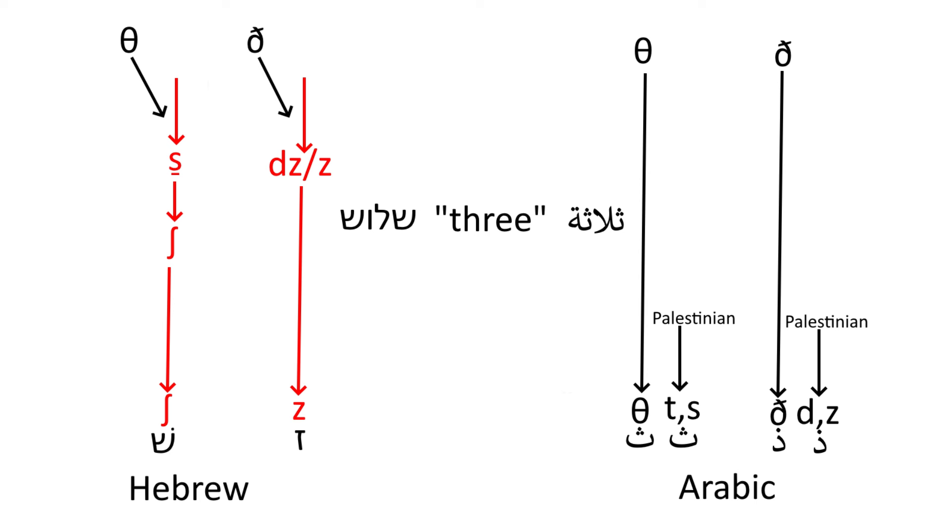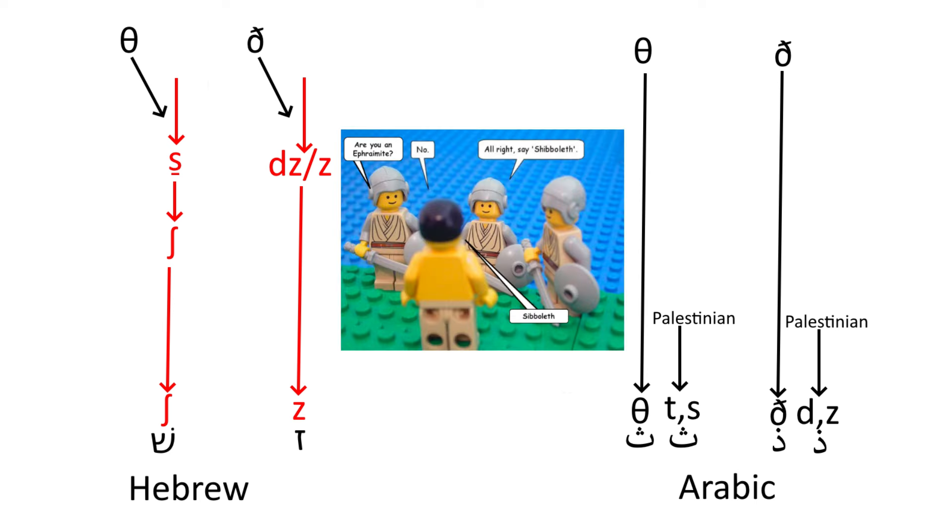so compare Hebrew shalosh and Palestinian Arabic talate, three, or Hebrew ze'ev and Palestinian Arabic dib, wolf. The other hypothesis concerning the Shibboleth story is that the word originally had a Th sound,